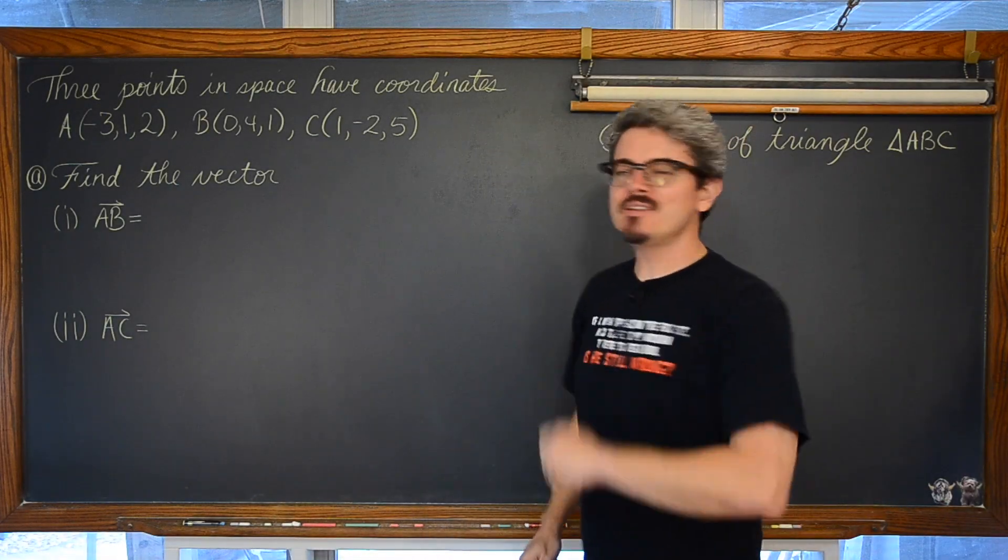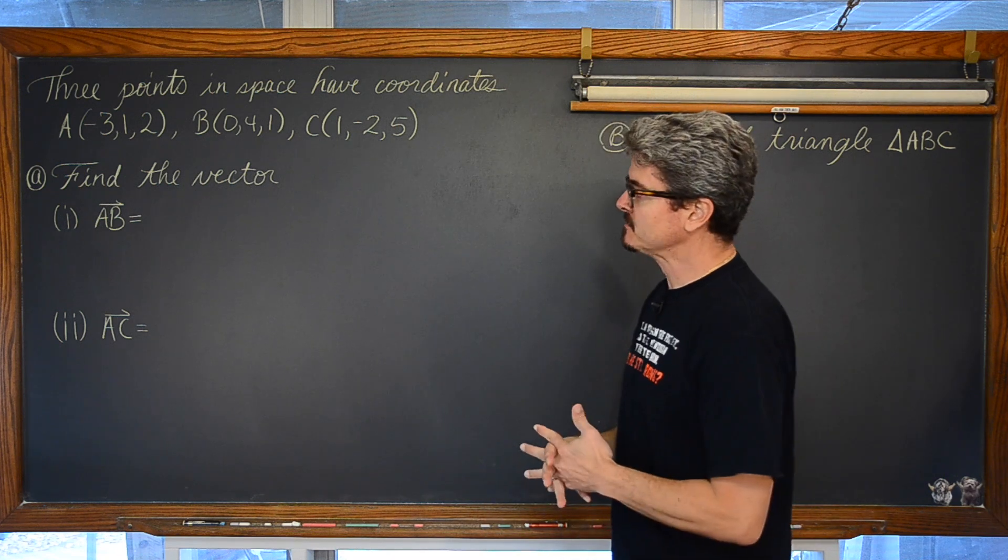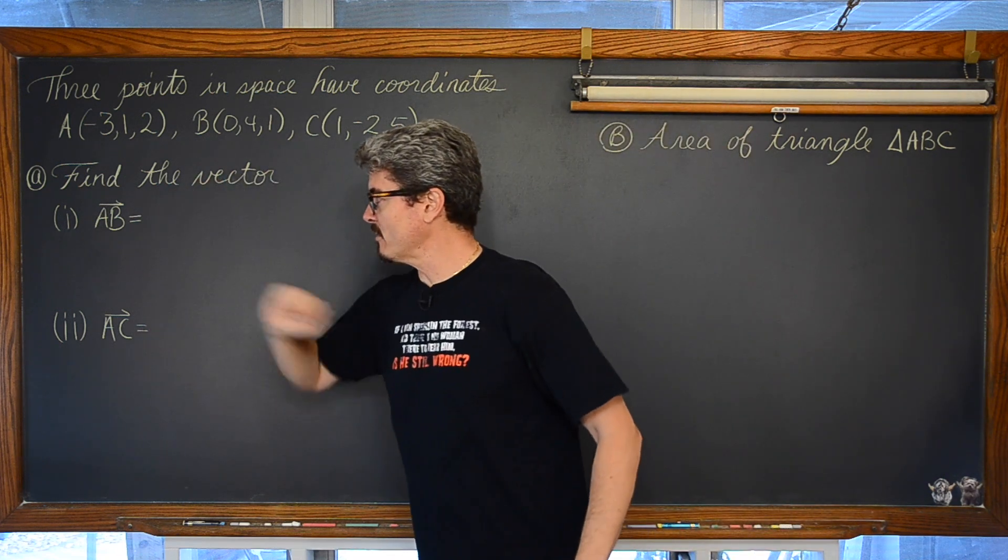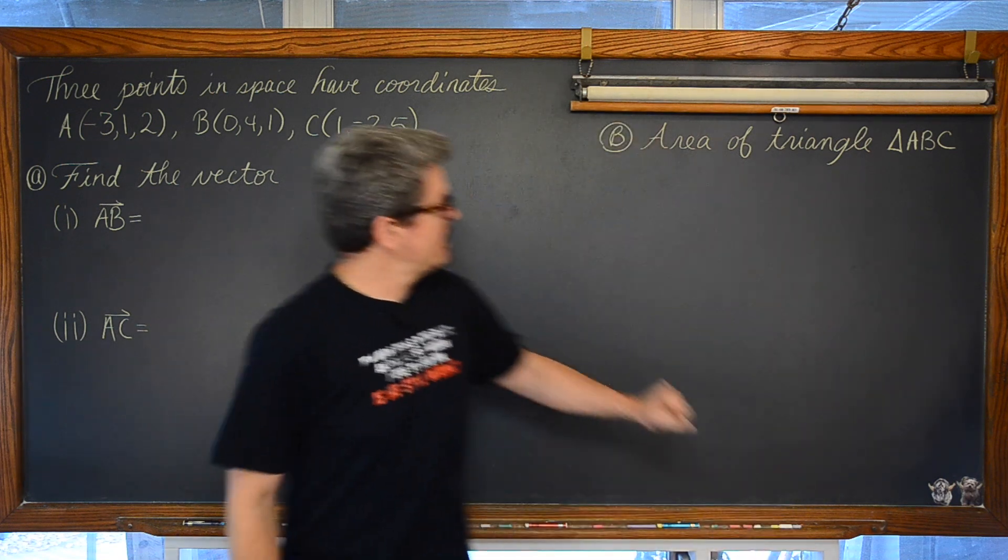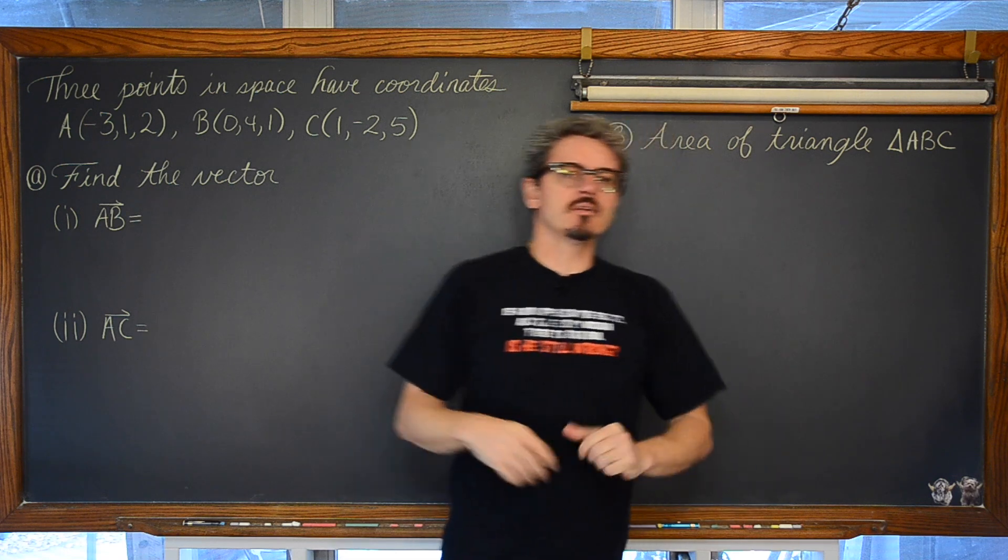BAM! Mr. Tarrou! In this video we are going to be taking a look at three points in three dimensional space. We are going to find the component form of vector AB and vector AC. Then, hence or otherwise, we are going to find the area of the triangle ABC.